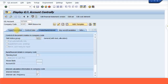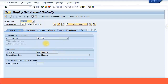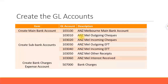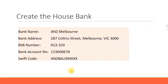So I have now created the bank charges expense account. You need to create all these accounts individually as mentioned. Then let's do the next setting — setting up the house bank. I have my house bank details here: the bank name is ANZ Melbourne, this is my bank address, and this is my main bank account number, called the BSB number in Australia, which stands for Bank State and Branch number. It's also called a bank identifying number — each bank has a unique identifying number.